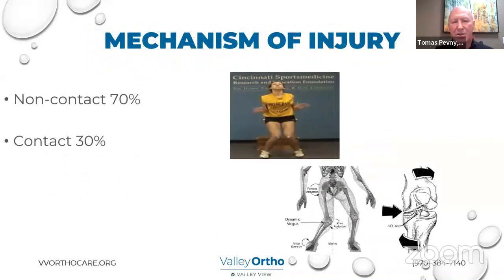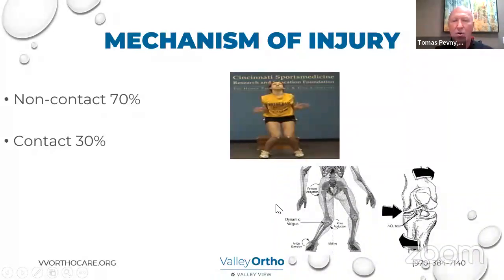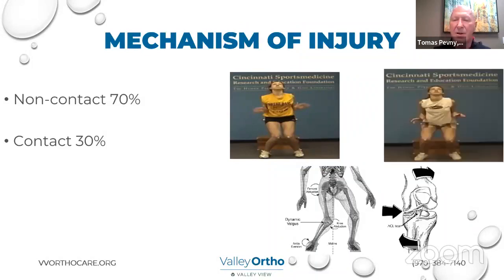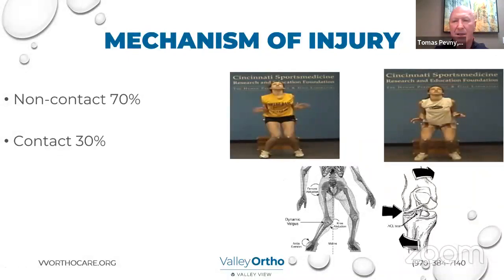About 70% of ACL tears are non-contact. With poor biomechanics in landing, the femur goes in, the tibia goes out and rotates, putting tremendous stress on the ACL. There have been ACL prevention clinics that have significantly reduced ACL tears in susceptible women — particularly junior high, high school, and college women athletes. They teach appropriate landing mechanics, such as keeping the knees wider apart, which has significantly reduced the risk of ACL in high-risk individuals.